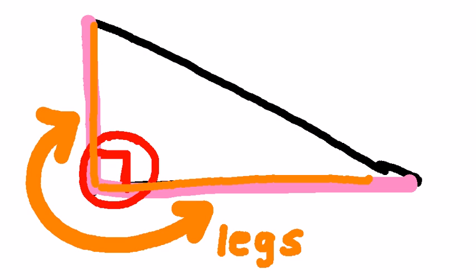But what's an easier way to identify them, in some cases at least, is that they're the shortest sides. This is the first shortest side, this is the second shortest side in the triangle. And these are called the legs.